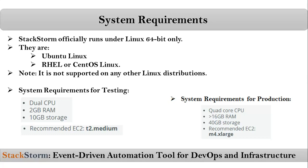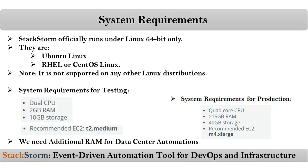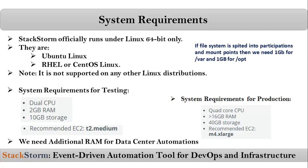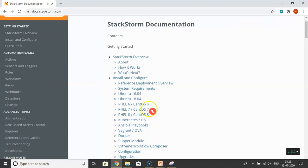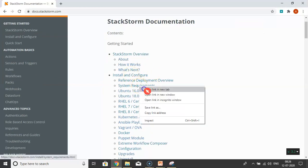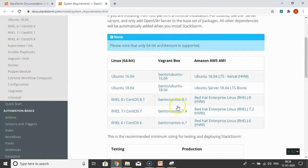If you are using StackStorm for data center automation, we need some additional RAM. And if you split your file system into partitions and mount points, we need 1 GB for /var and 1 GB for /opt. The same information can be found in the official StackStorm documentation at docs.stackstorm.com under system requirements.